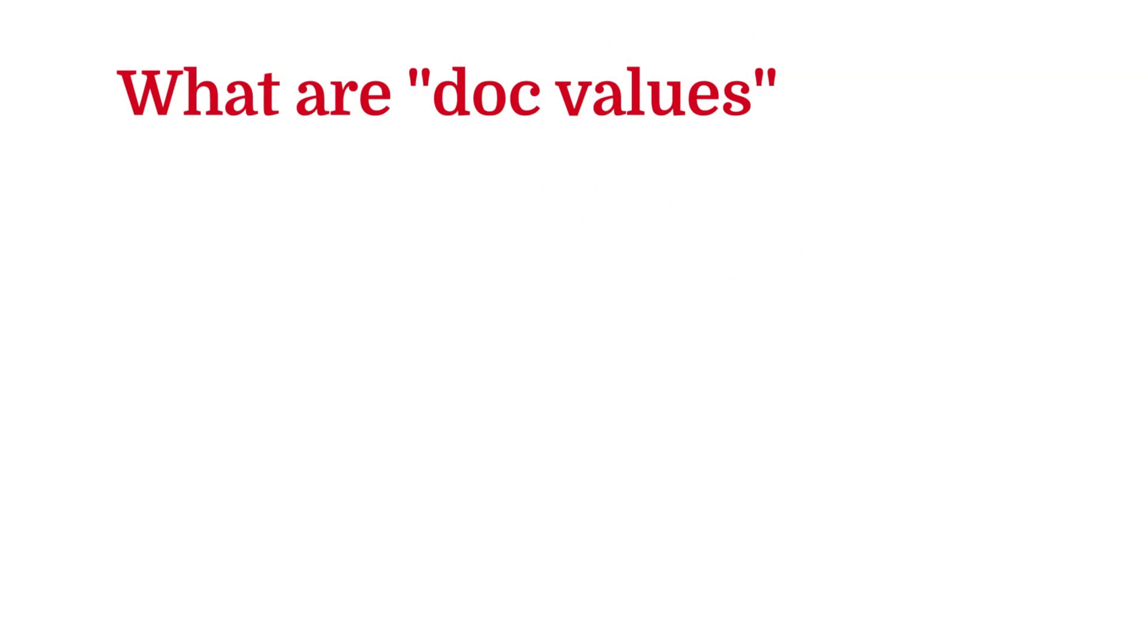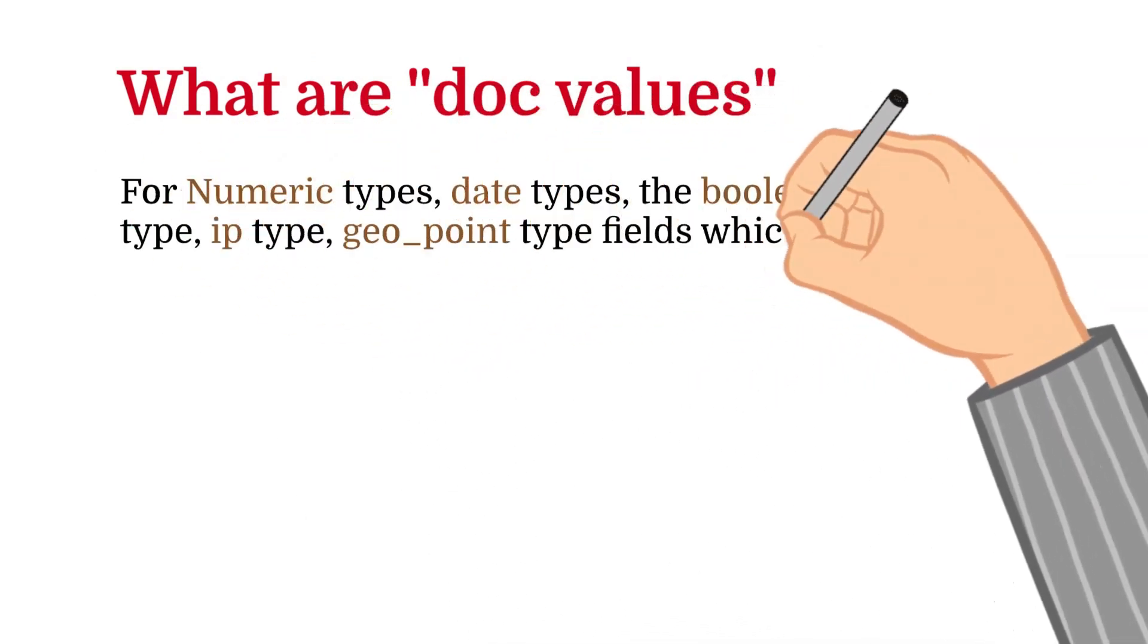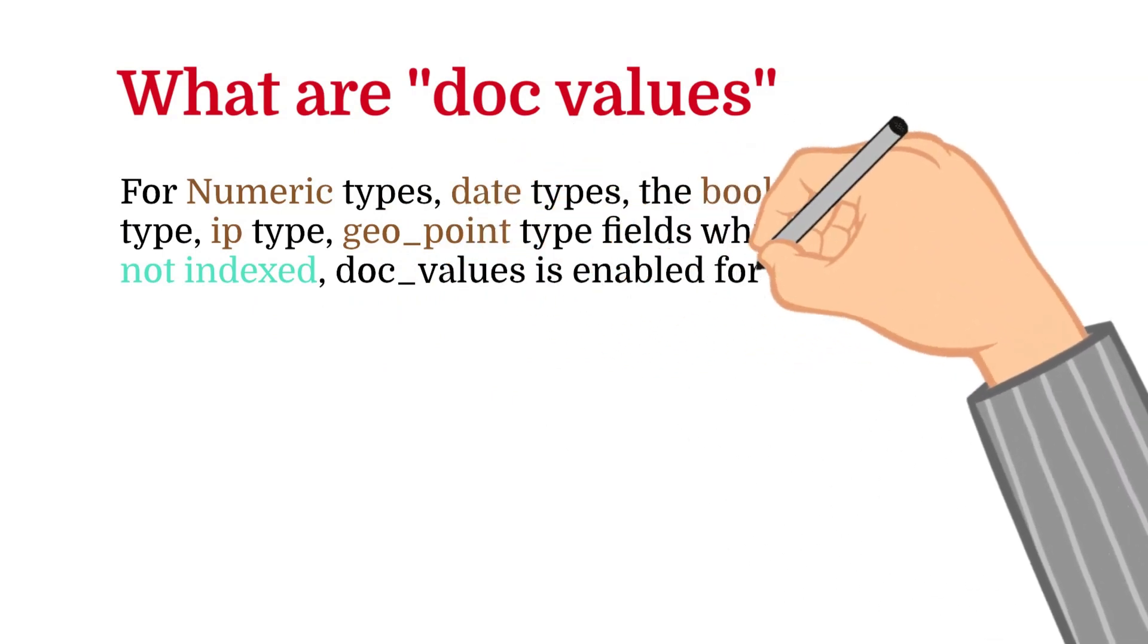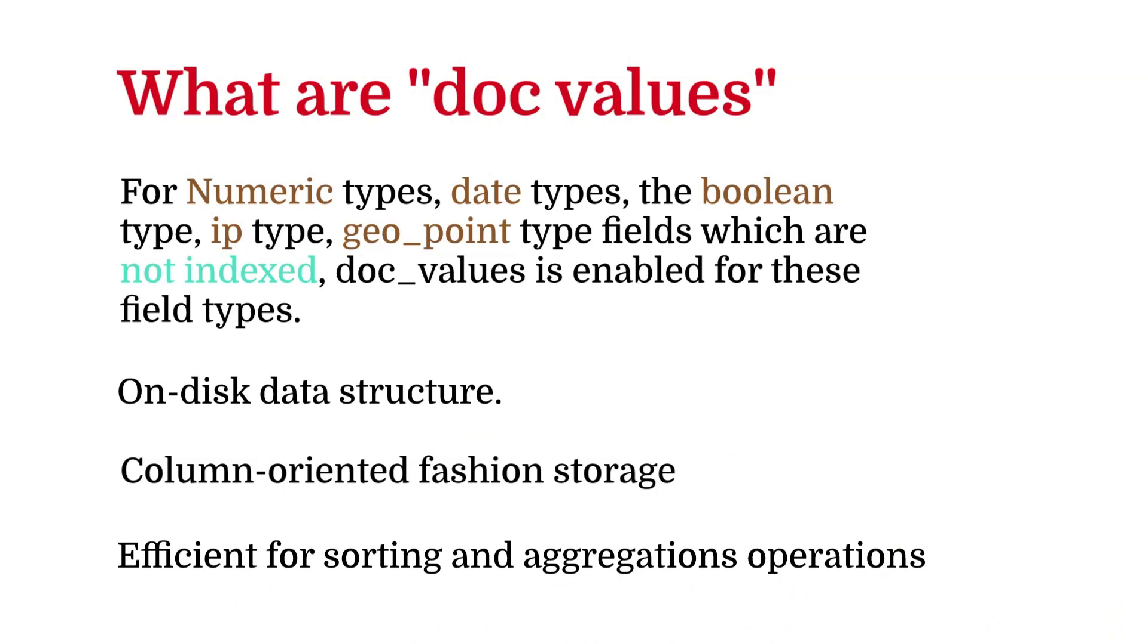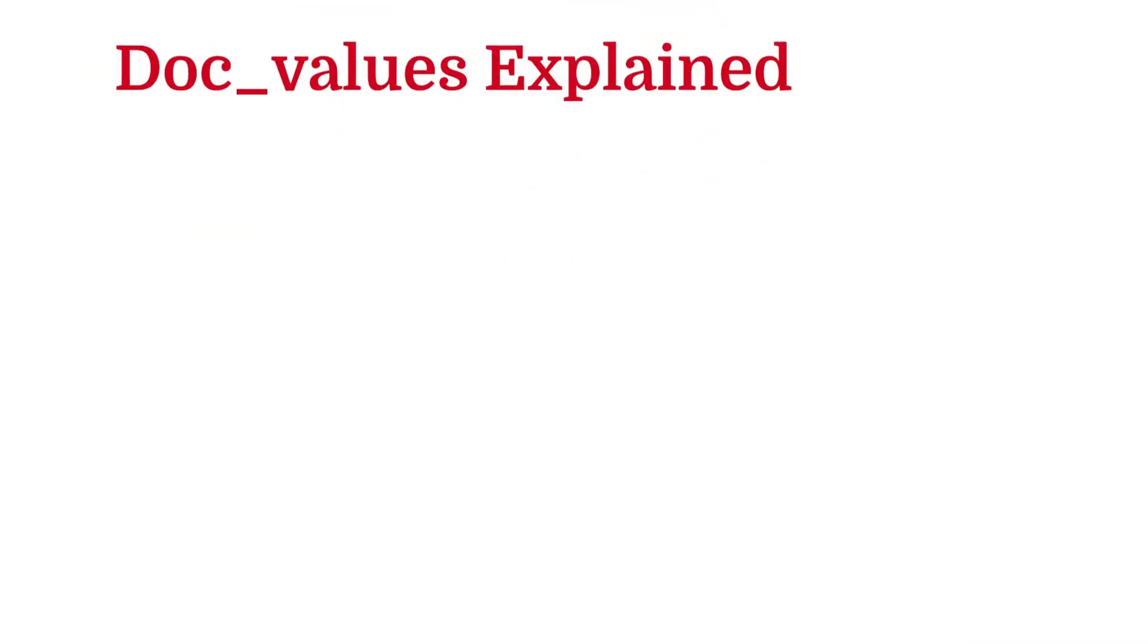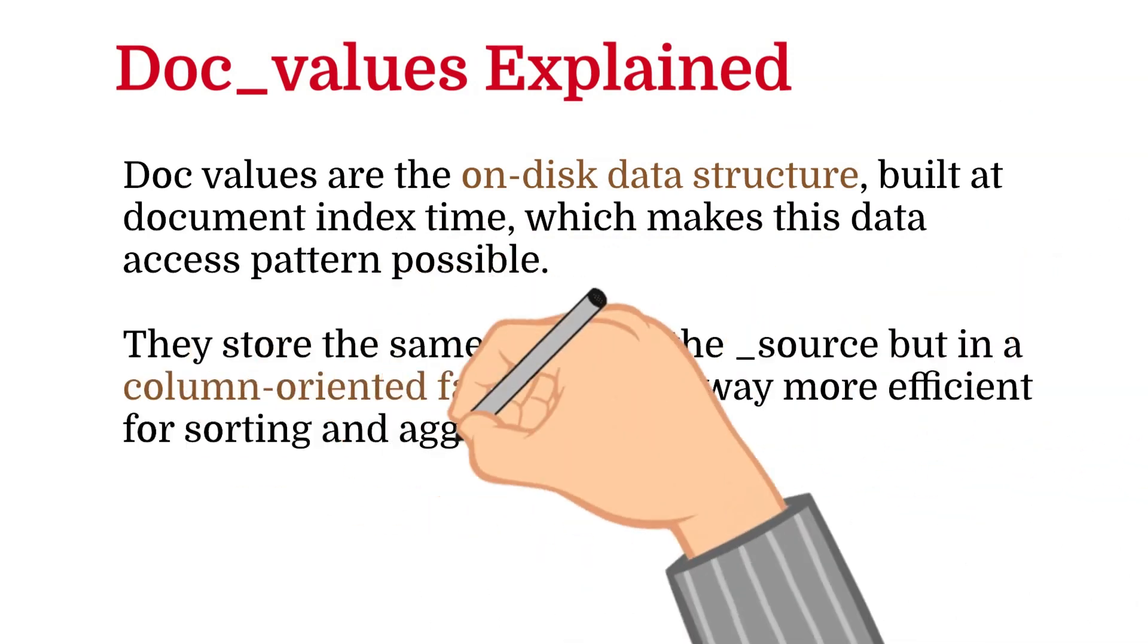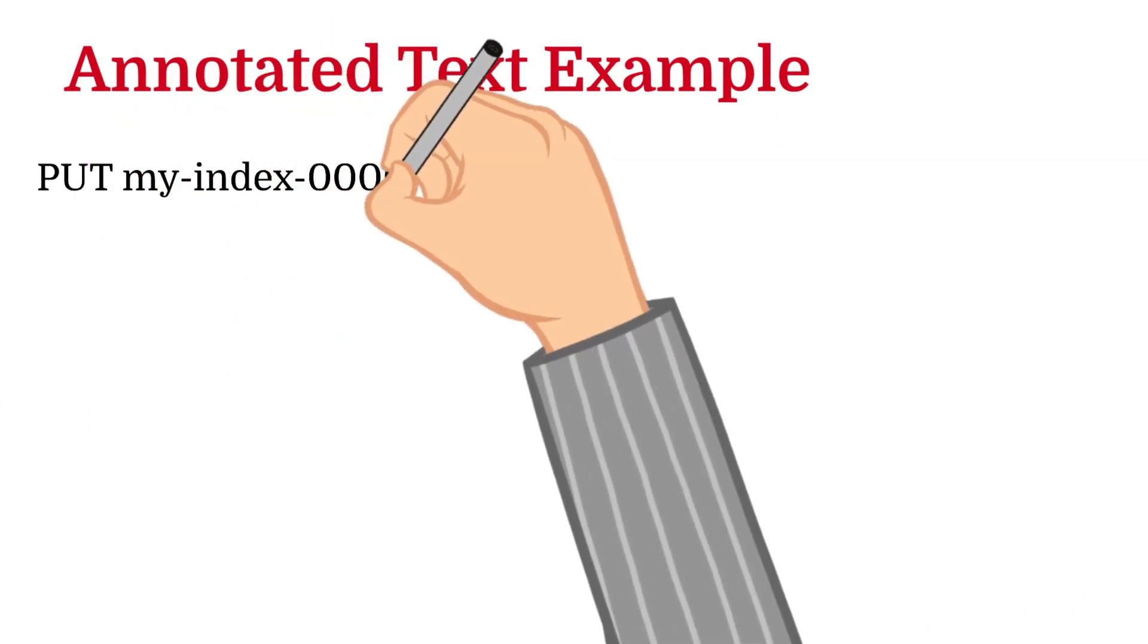When I was explaining the second type of queries, that is numeric, date, boolean, IP, geo point, I mentioned something about the doc values that we have to enable. Let's have a look at what doc values are. Doc values are on-disk data structures built at document index time which makes this data access pattern possible. They store the same values as the source but in a column-oriented fashion that is way more efficient for sorting and aggregations. Doc values are supported on all field types with the notable exception of text and annotated text.